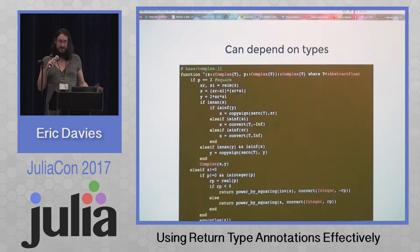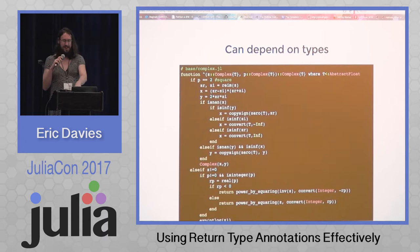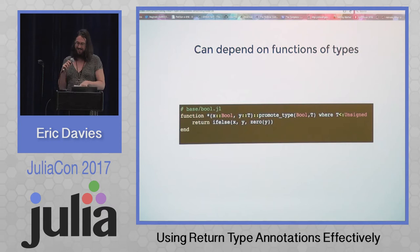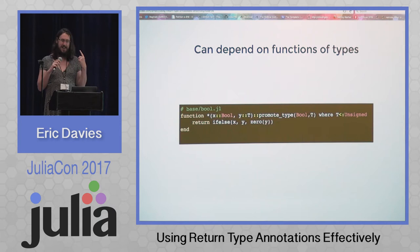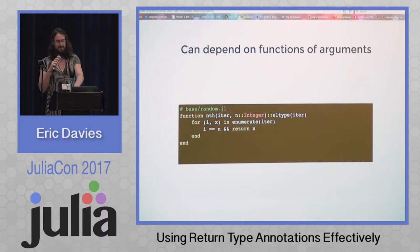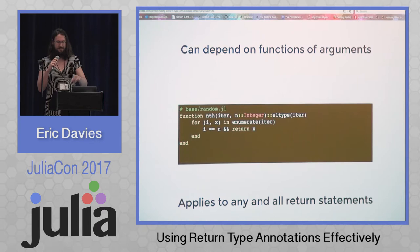Return type annotations can depend on types in the method signature — the complex T return type there is the same T that was matched in dispatch. Return type annotations can be expressions which call functions on those types. Here we have another example from base where it's promoting bool with whatever type T matches. And they can depend on functions of arguments — here we're not depending on the type of iter, we're depending on a function of iter, in this case Ltype. And they apply to every possible return path, so even though this could return from multiple different places in the iterator, it's still going to apply the same conversion.